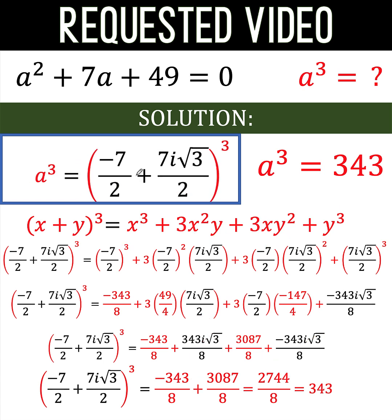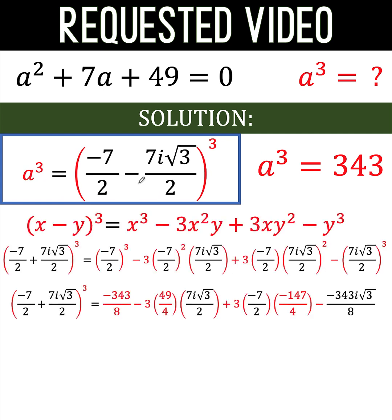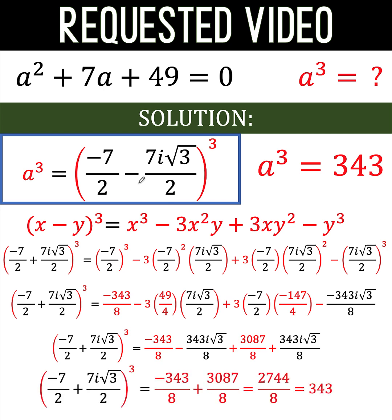Now for the other root, where we have the minus sign here, we do the same evaluation. So using the same formula and substitution, notice again that the value of a cube here is 343, which is also a confirmation that our answer for a cube is really correct.